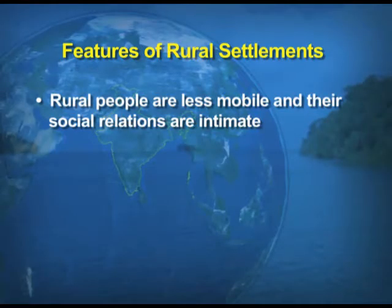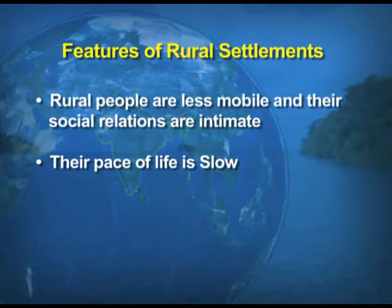In villages there is plenty of land for production. Further, rural people are less mobile — they don't believe in mobility like urban people. Their social relations are intimate, and unlike urban settlement people, their pace of life is very slow, though they still enjoy their life.